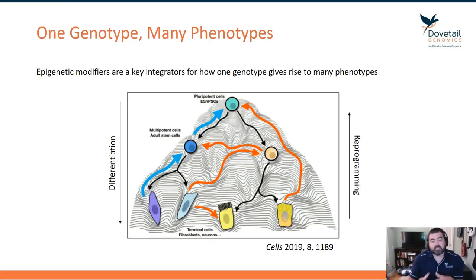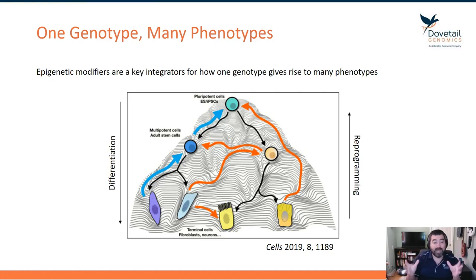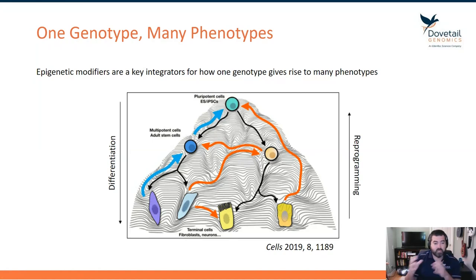I want to start this case study with a familiar image — the Waddington landscape — where at the top you see that pluripotent stem cell, the one genome that all cells in our bodies have. But as your body develops, these cells can get moved into different valleys in the Waddington landscape, largely driven by epigenetic changes.